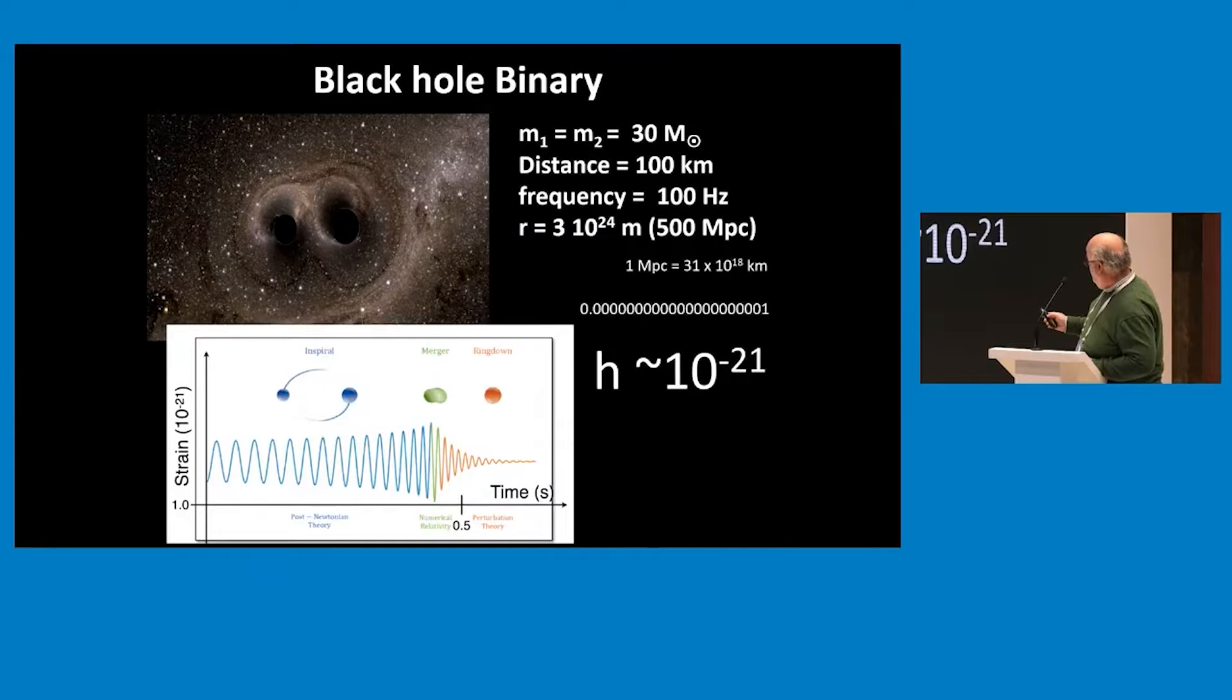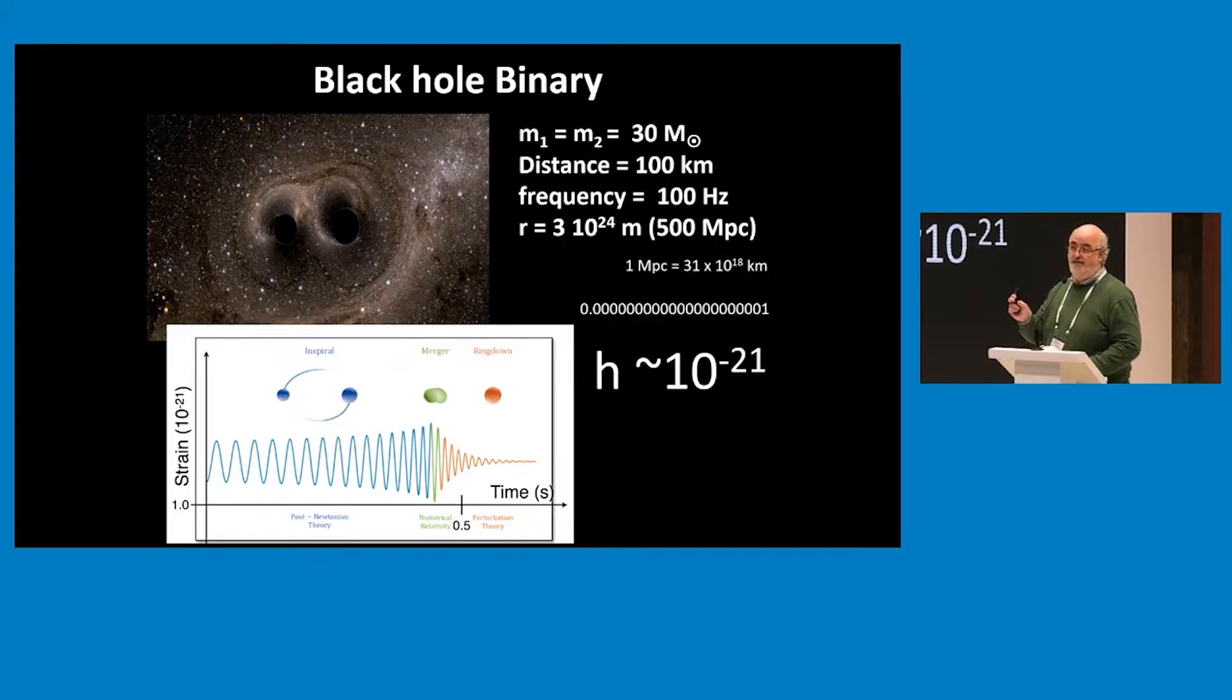Just to give you a feeling of the problem, if you make a simple calculation of what is the perturbance that you generate by having two black holes, 30 times the mass of the sun, with a given distance, then you get a number which is 10 to the minus 21. That's very, very small. Having the precision to go to 10 to the minus 21 is like saying that I would like to measure the distance between here and the sun with the precision of the size of an atom. So you cannot do it with a ruler.